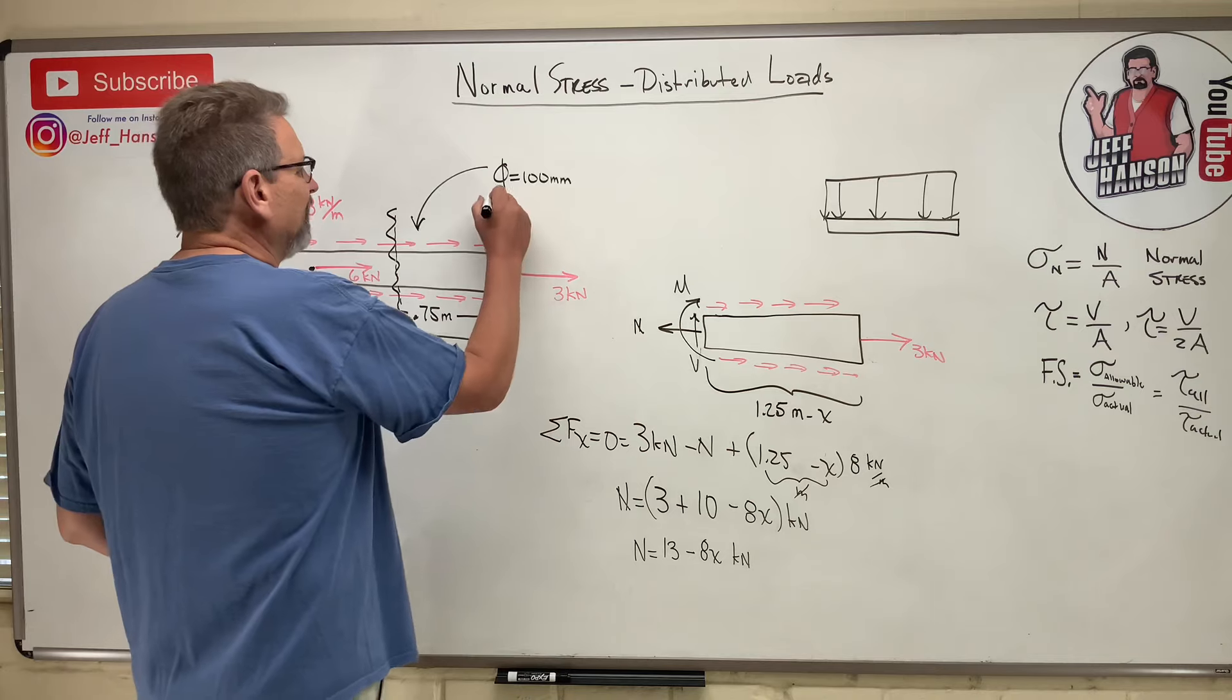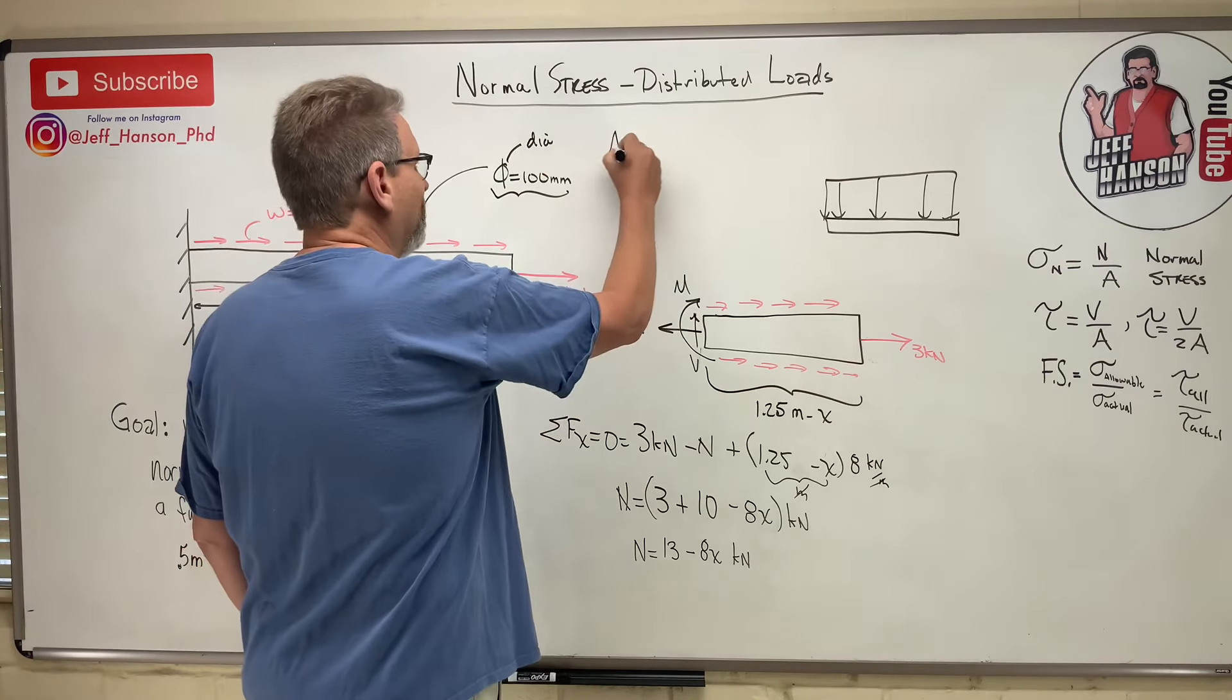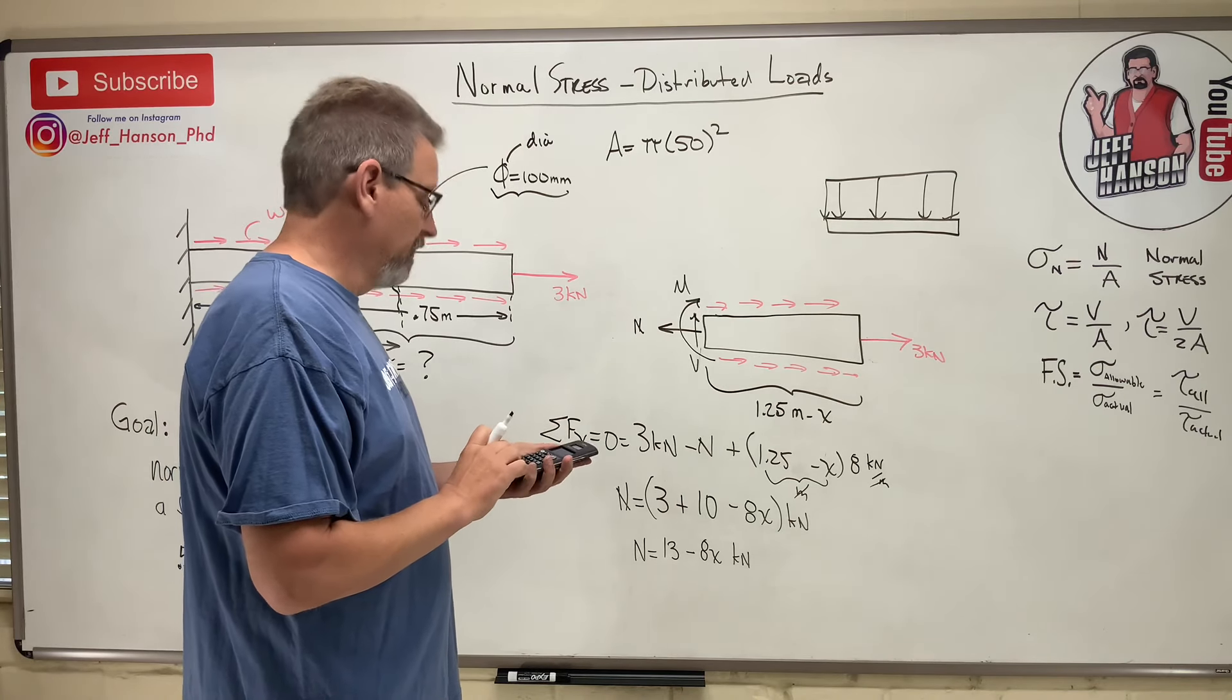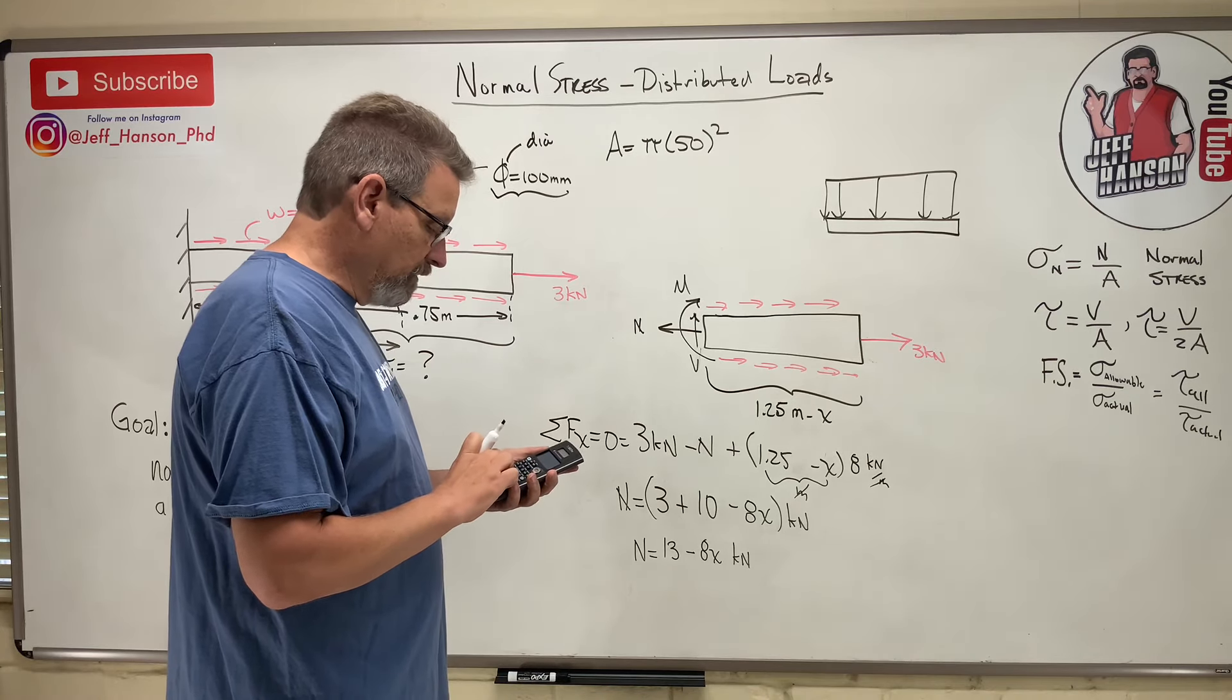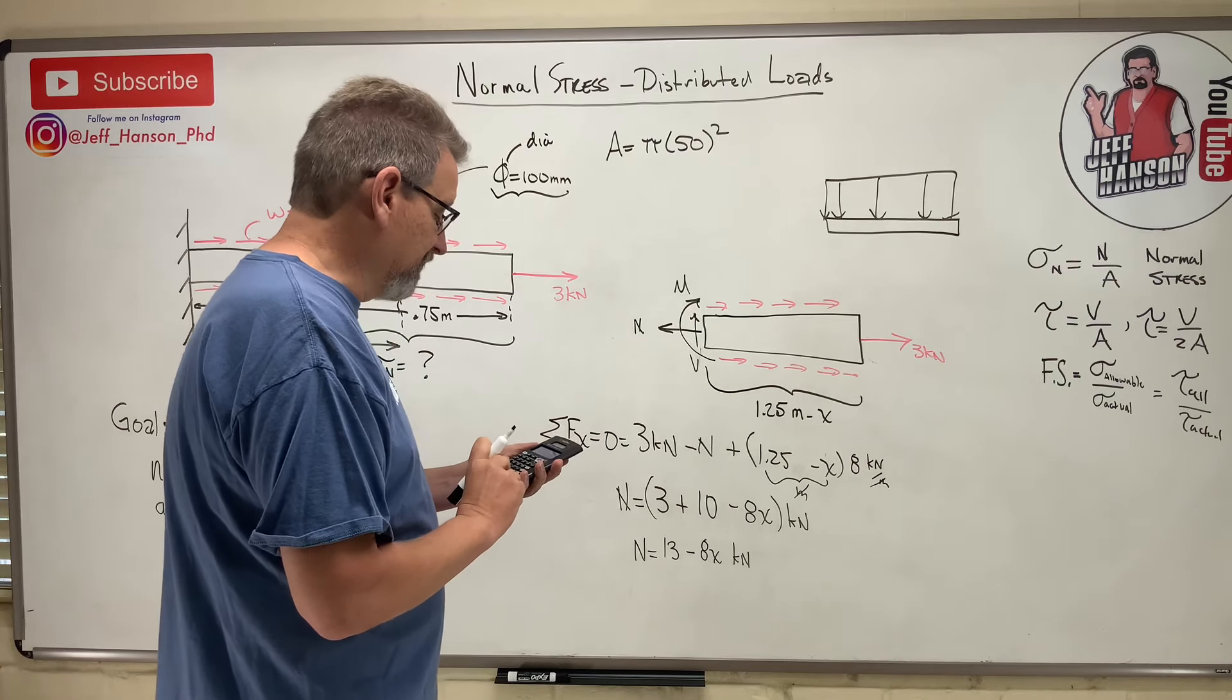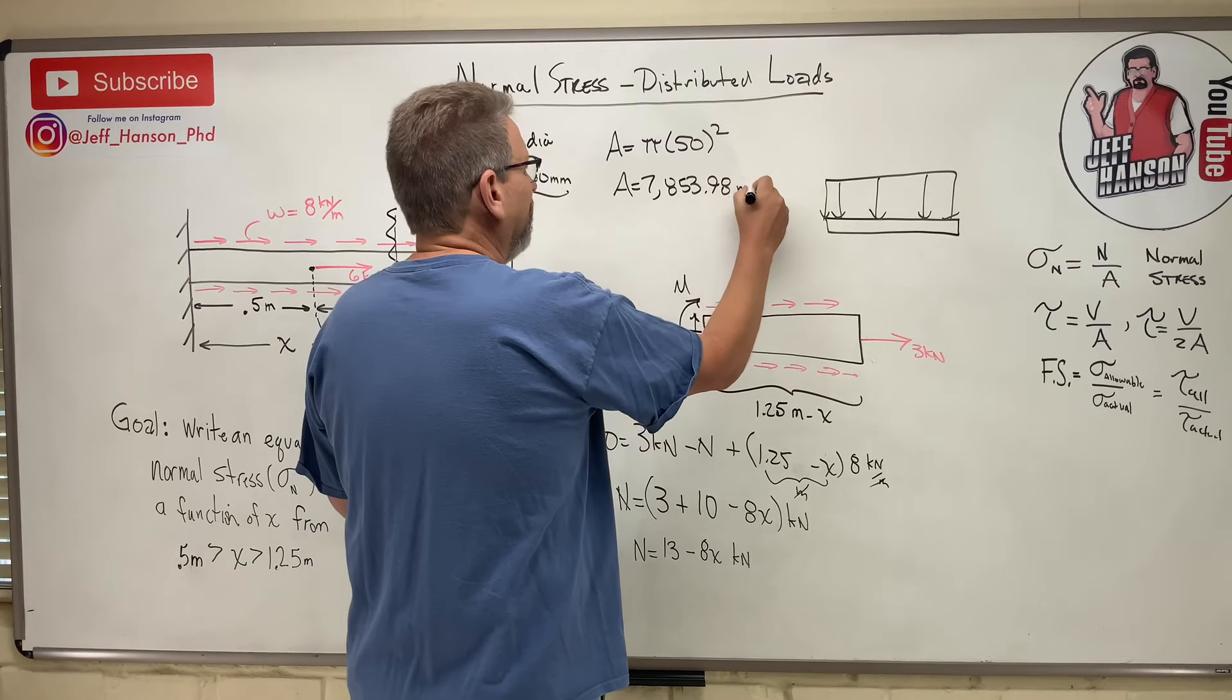Well, that's pretty easy, too. They tell us that this phi, that's the international symbol for diameter, is 100 millimeters. And so a is equal to pi times 50 squared. How much is that? I don't know. Here we go. Pi times 50. Let's make sure. Millimeters is good. 50 squared. That's good. And that is 7,000 A is equal to 7,853.98 millimeters squared.